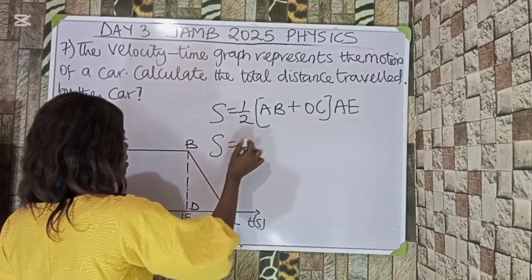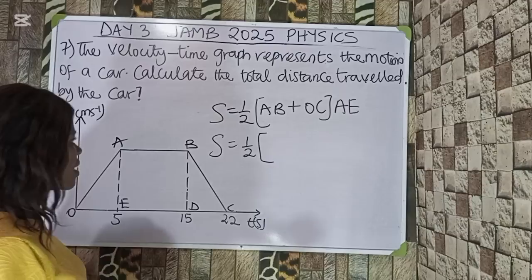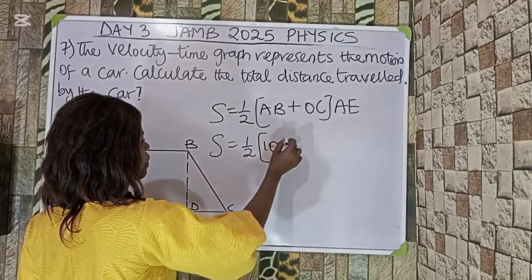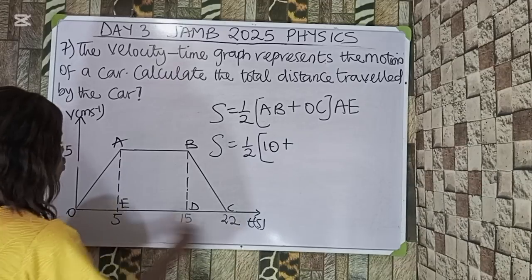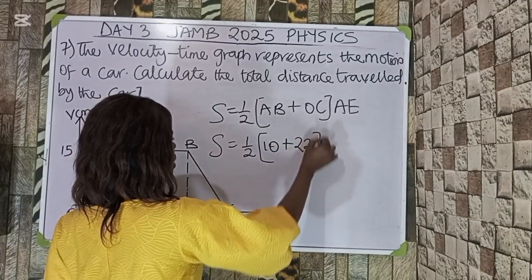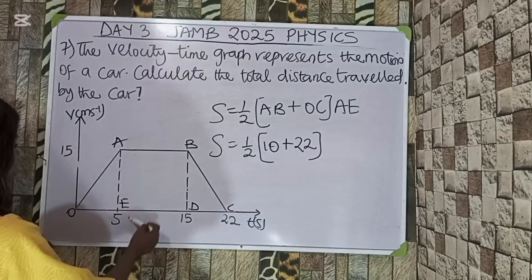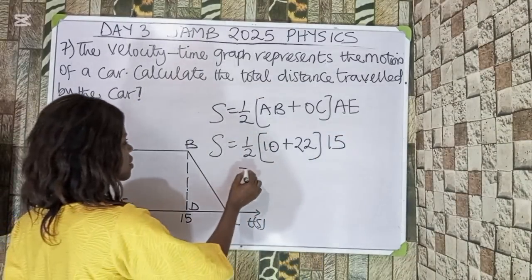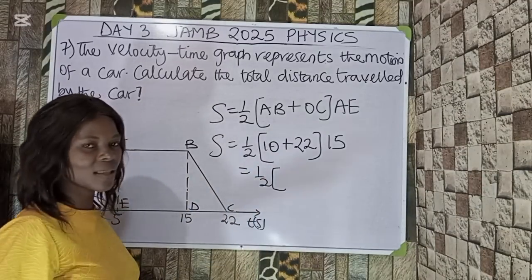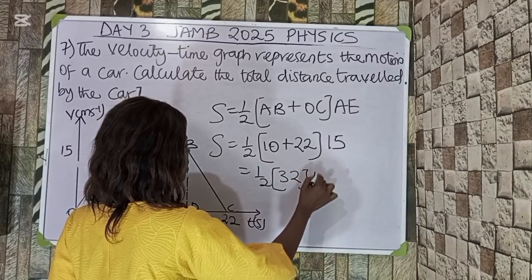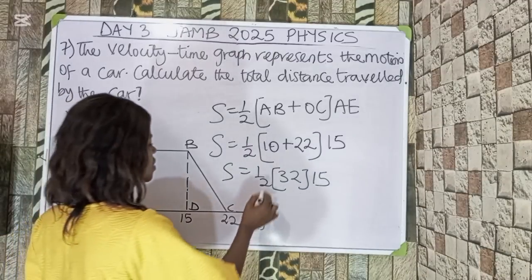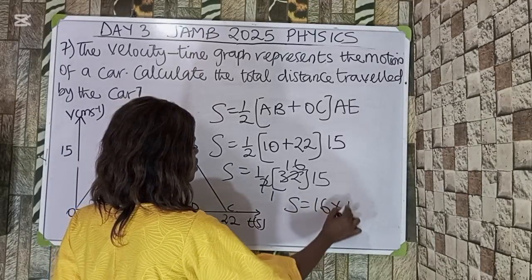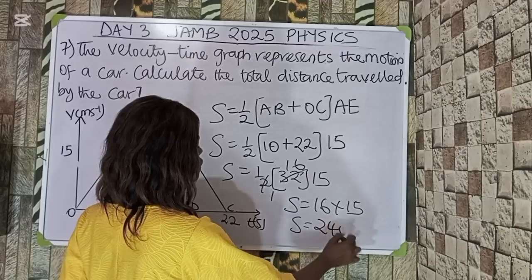Substituting the values: AB = 15 − 5 = 10, OC = 22 − 0 = 22, so AB + OC = 10 + 22 = 32. The height AE = 15 − 0 = 15. Therefore, x = ½ × 32 × 15. Half of 32 is 16, and 16 × 15 = 240 meters. The total distance traveled by the car is 240 meters.